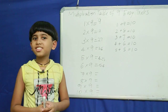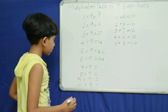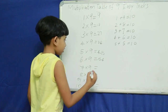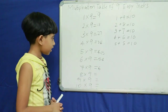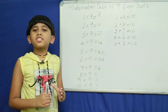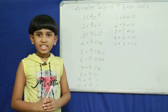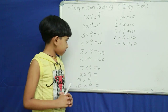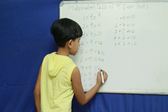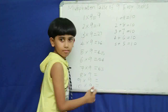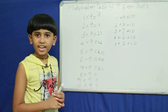Next, predecessor of 7 — 6. What do you add to 7 to get 10? 3. So we get 63.